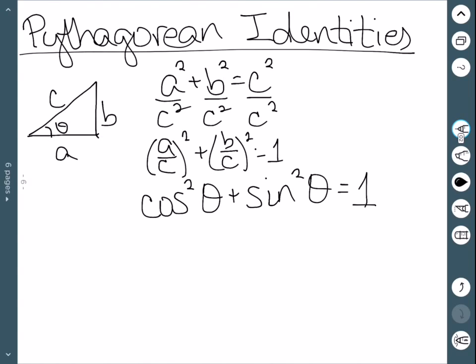If we were to divide this through by cosine squared, cosine squared over cosine squared is 1. Sine over cosine is tangent. And 1 over cosine is secant.